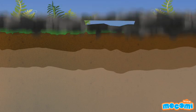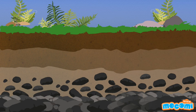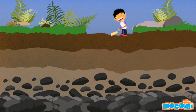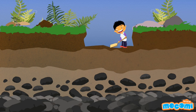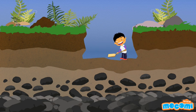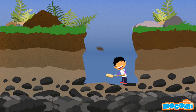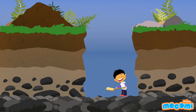What is a Soil Profile? A vertical section cutting through the soil showing the different layers of the soil is called a soil profile. A soil profile can be seen by looking at the sides of a recently dug trench, or while digging a well or a foundation of a building.